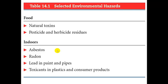Indoors we find hazards like asbestos, which is used in the construction of homes to reduce flammability, making them better able to resist fire. Radon, as mentioned, lead in paint and pipes — almost all paint you buy now is lead-free, but that wasn't true in the 70s, so older homes might still have lead paint. There can also be toxicants in plastics and consumer products. Sometimes if you smell a new electronic device, those gases coming off are usually toxic gases.